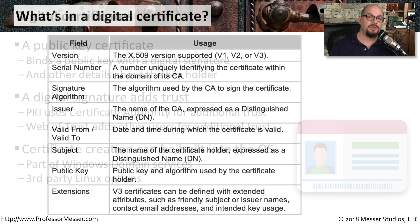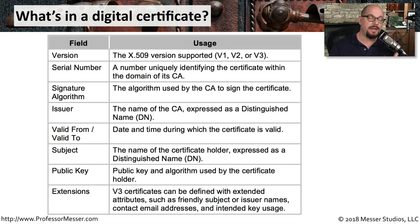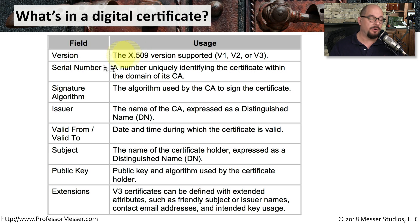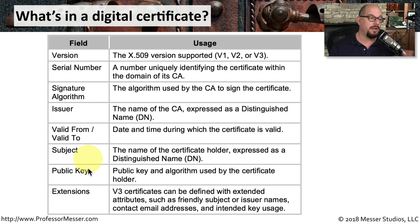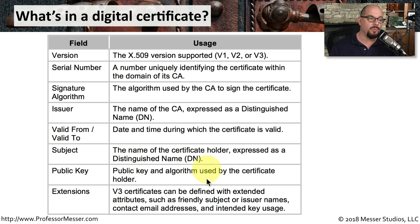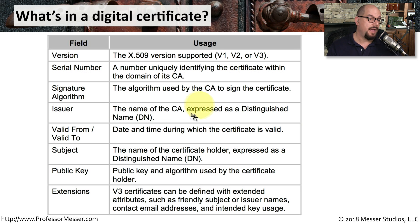The digital certificate format has a standard format called the X.509 certificate format. There are a number of different items listed as part of a certificate, including a serial number so you can identify the certificate. Commonly, a public key will be part of this certificate as well. The certificate authority will also be listed as the issuer.